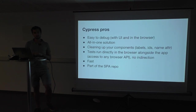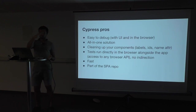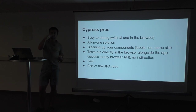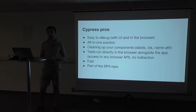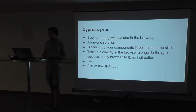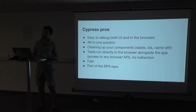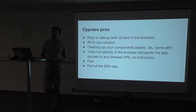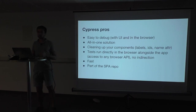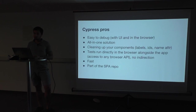Looking at pros and cons: Cypress is really strong at debugging — with the UI and time travel you can go through each test and each step within it. You get an all-in-one solution; just install it via npm or yarn and everything works out of the box. Implementing those end-to-end tests was also a lesson learned for me — I had to clean up some components because some form fields didn't have a name, ID, or label, so it was actually a good thing because components became easier to query.